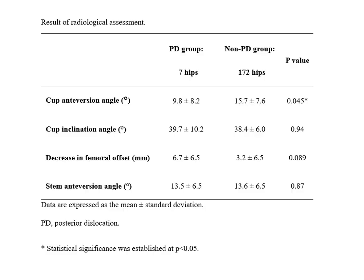Compared to hips without posterior dislocation, those with posterior dislocation exhibited a significantly smaller cup anteversion angle and a non-significantly greater decrease in femoral offset.